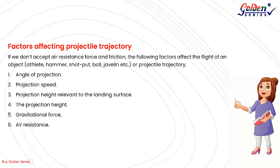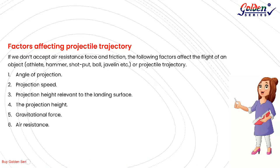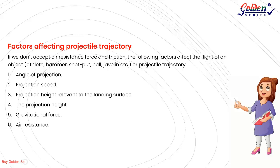Factors Affecting Projectile Trajectory. If we exclude air resistance and friction, the following factors affect the flight of an object — athlete, hammer, shot put, ball, javelin, etc. — or projectile trajectory: 1. Angle of projection; 2. Projection speed; 3. Projection height relative to the landing surface; 4. The projection height; 5. Gravitational force; and 6. Air resistance.